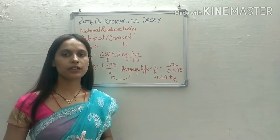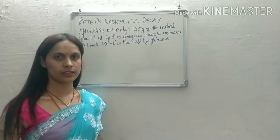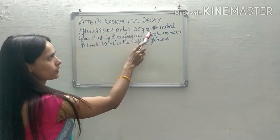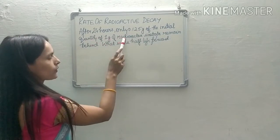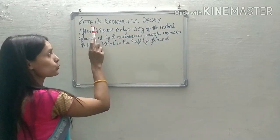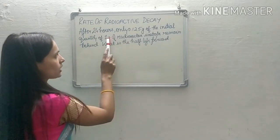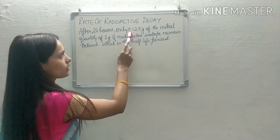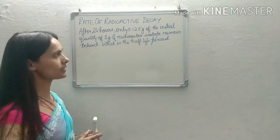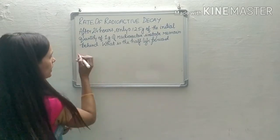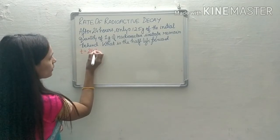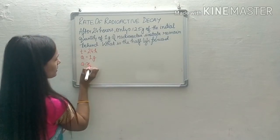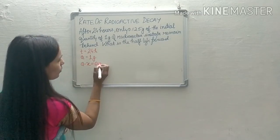Let us do an example related to this topic. After 24 hours, only 0.125 gram of the initial quantity of 1 gram of a radioactive isotope remains behind. We have to calculate the half life period. Given: t = 24 hours, a = 1 gram (initial concentration), a minus x = 0.125 gram (final concentration).